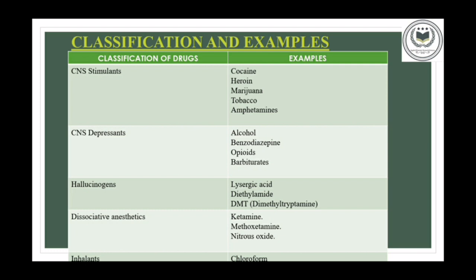Next is hallucinogens. Hallucinogens are drugs which cause the user to perceive things differently from the way they actually are. Some examples of this category are MDMA — also known as molly — LSD, lysergic acid, etc.